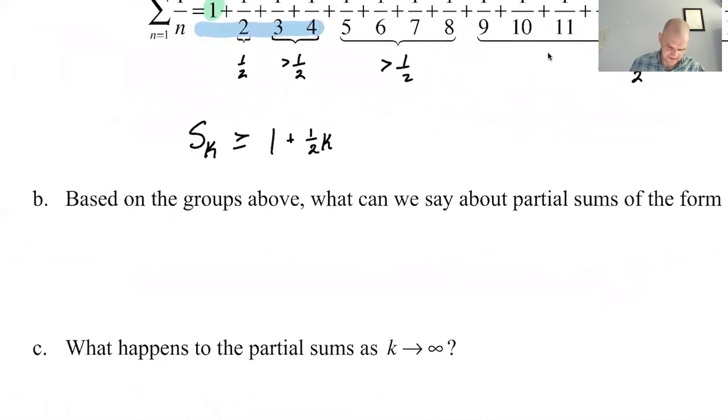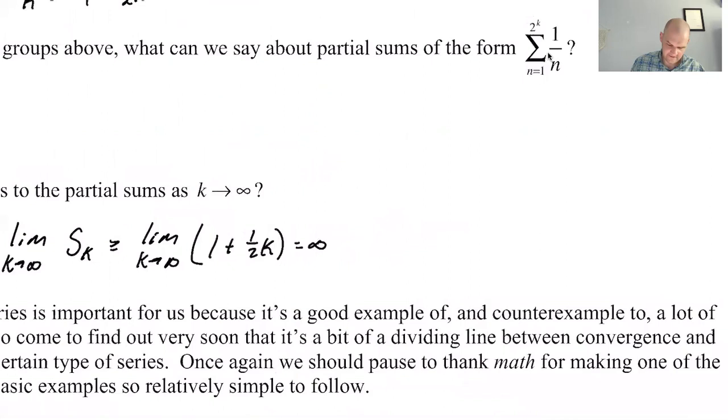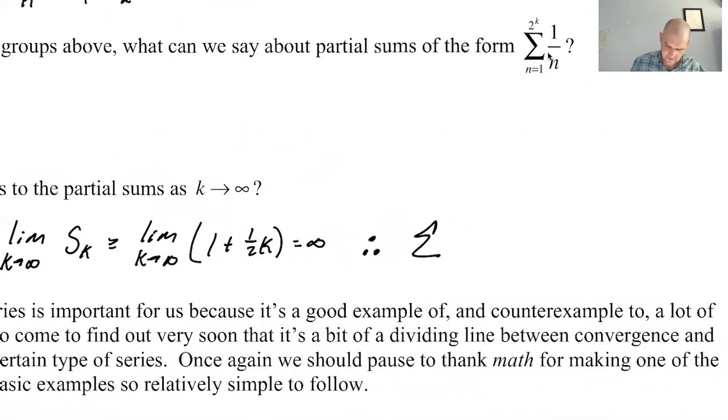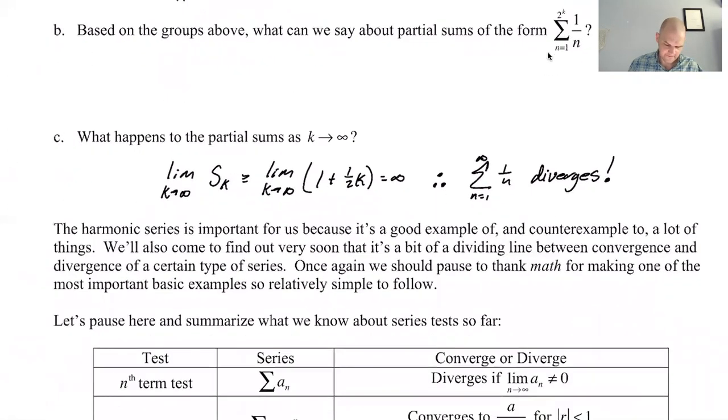So I'm going to say that the limit as K approaches infinity of S sub K is the limit as K approaches infinity, which is greater than or equal to one plus one half K, which is infinity. So if something is greater than or equal to infinity, then we can definitely say that the sum from one to infinity of one over N diverges, because the limit of its partial sums is infinite. So the harmonic series diverges and it's one over N to the first diverges. That's going to be really important.